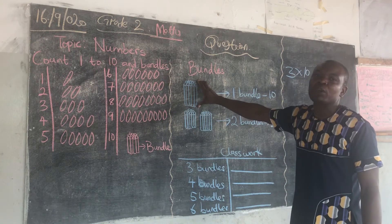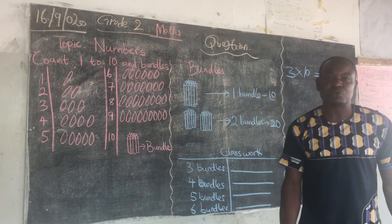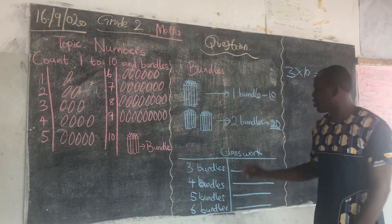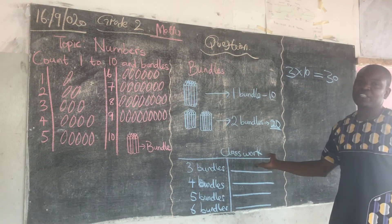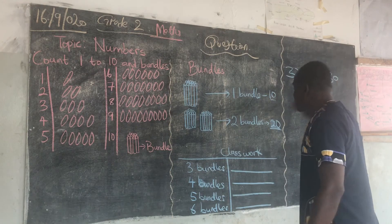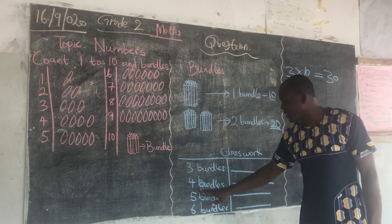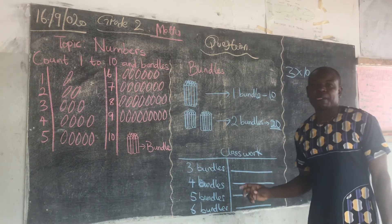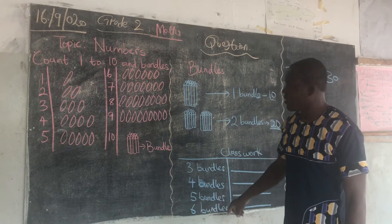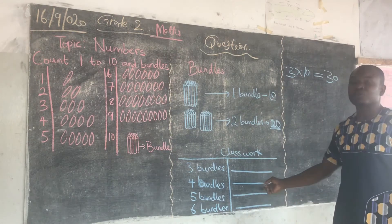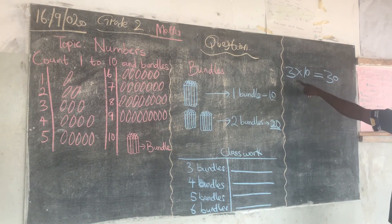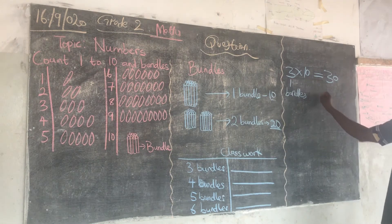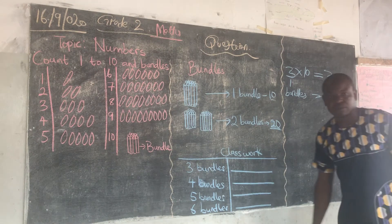Because each bundle we have here — 1 bundle gives us 10 pencils. 2 bundles gives us 20 pencils. Your classwork is 3 bundles gives you how many pencils? That is to say, 3 times 10 gives you 30 pencils. Same thing goes to here: 4 bundles — 4 times 10 gives you the number of pencils in a bundle. 5 times 10 — 5 bundles times 10 pencils gives you how many pencils? Just follow the steps: 3 times 10, this is 3 bundles, times 10 pencils gives you 30.